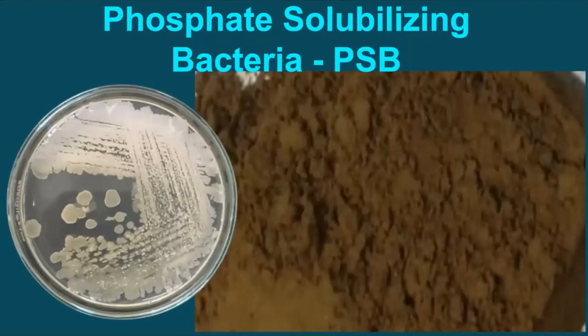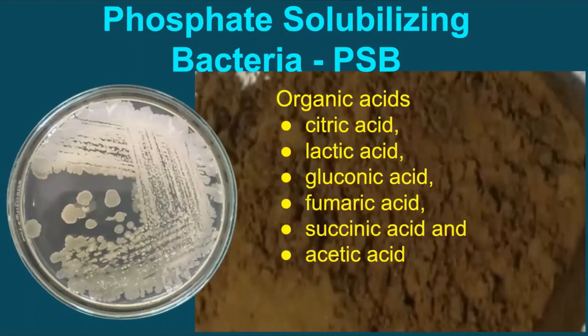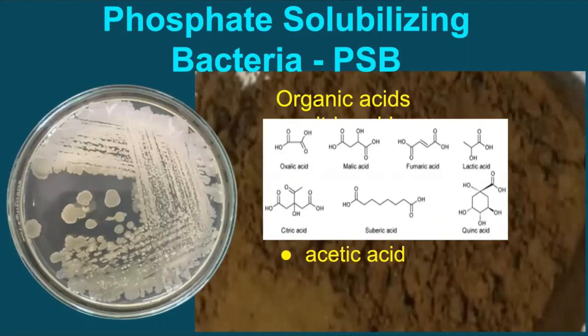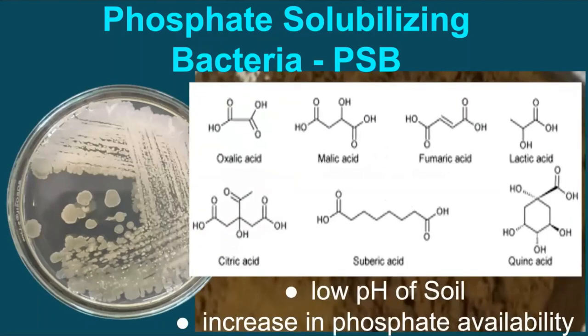Phosphate-solubilizing bacteria, or PSB as they are commonly known, are beneficial microbes that secrete certain organic acids such as citric acid, lactic acid, gluconic acid, fumaric acid, succinic acid, and acetic acid, that helps to bring down the pH of the soil. Thereafter, solubilizing insoluble compounds into forms easily available by the crop plants.